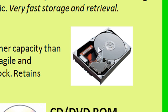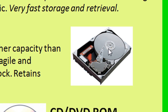A read-write head on an arm floats above the surface and moves back and forth to access different tracks on the rotating disk. Although this device stores an awful lot of information, it's rather delicate and susceptible to damage from mechanical shock. If the arm touches the surface — that's a disk crash — the surface is quickly ruined and information is lost. Hard disks typically store hundreds of gigabytes, that is, hundreds of billions of bytes.